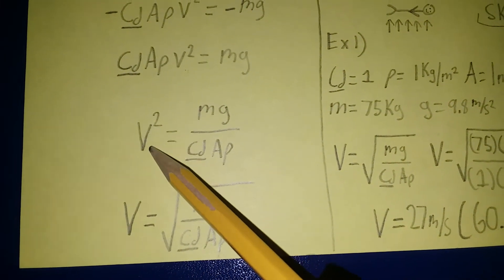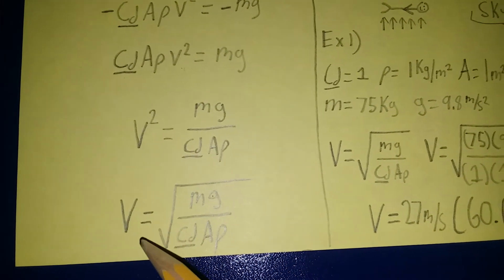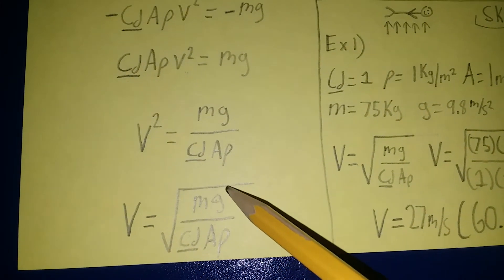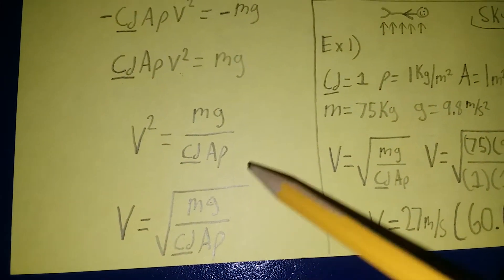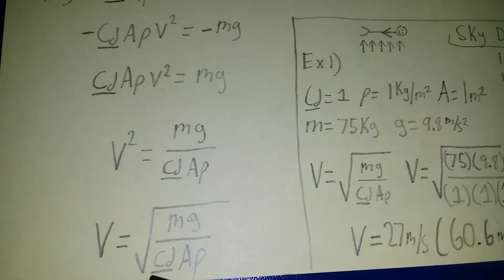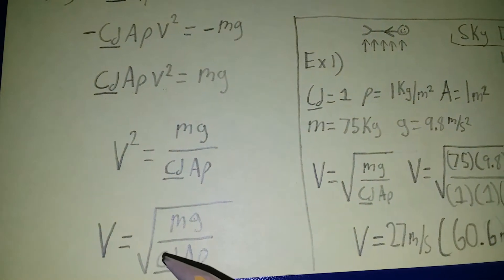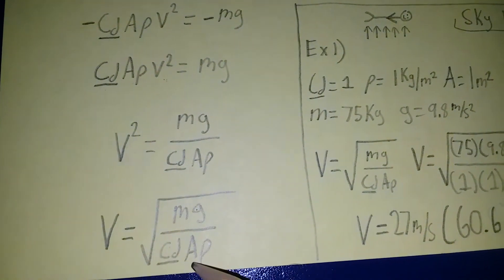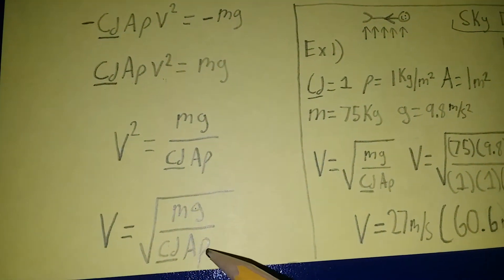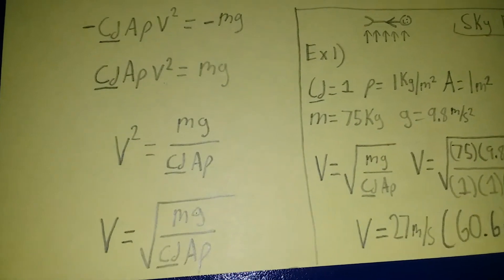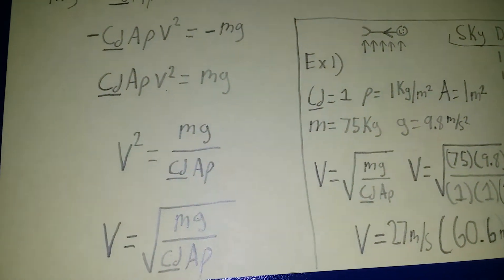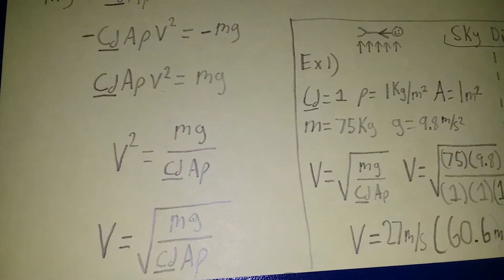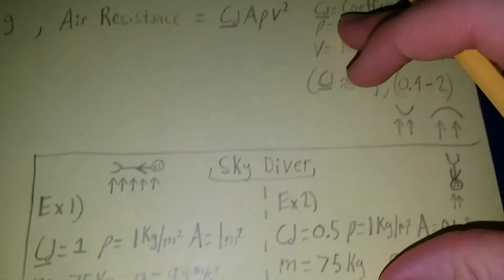Taking the square root gives us the terminal velocity: v = √(mg / (C_D × A × ρ)), where m is the mass, g is gravitational acceleration, C_D is the coefficient of drag, A is the cross-sectional area, and ρ is the density of the fluid (air).